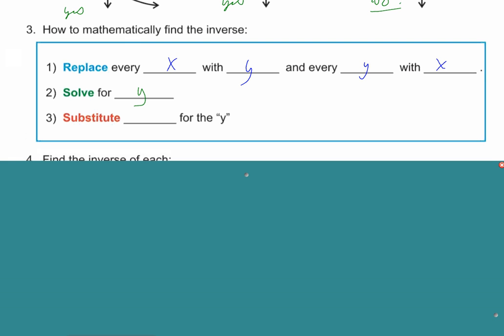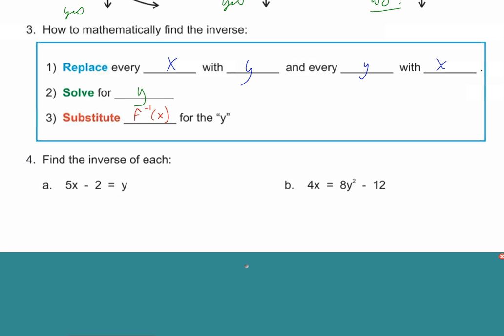Number three. How do you do it mathematically? Replace every x with y and every y with x. Solve for y. And here's a part students often forget, you've got to take points off. Remember to put the inverse notation, f to the negative one of x, in for the y.